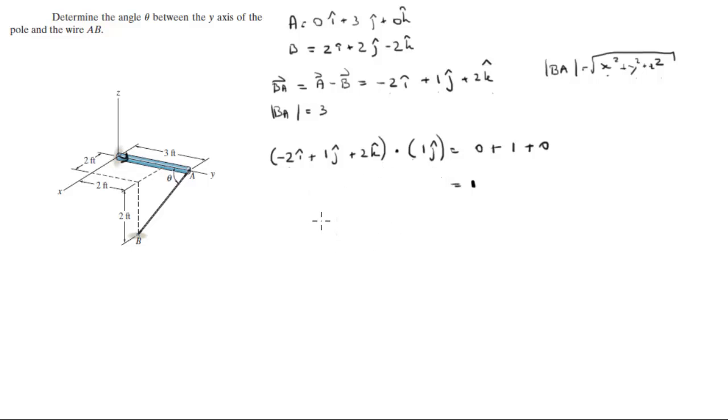You also know that the dot product, the magnitude of the vectors in the dot product times the cosine of the angle between them is equal to the dot product, and the dot product is 1.